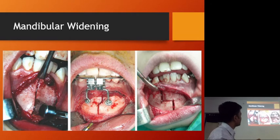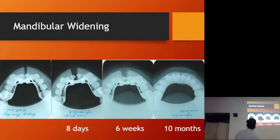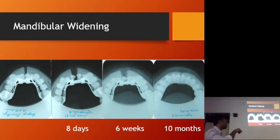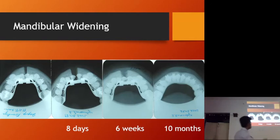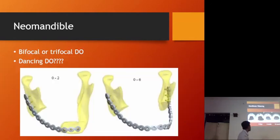Once we create space, orthodontic movements create the proper arch form. This case shows radiographs: eight days after the latency period, eight mm of space has been achieved; then slight ossification is seen; after ten months, proper bone formation is seen and teeth have been moved into the distraction site with proper arch form achieved.